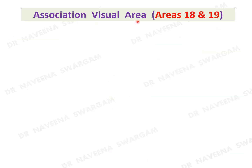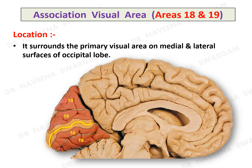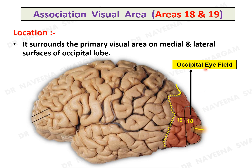Association visual area, areas 18 and 19: it occupies most of the occipital lobe on its medial as well as superolateral surfaces. It surrounds the calcarine sulcus, occupying the cuneus above and lingual gyrus below, with area 19 placed more peripherally. On the superolateral surface, areas 18 and 19 surround the tip of the calcarine sulcus. Together they are known as the occipital eye field.